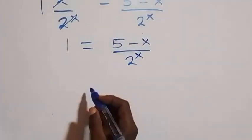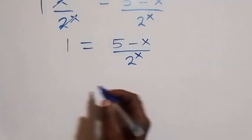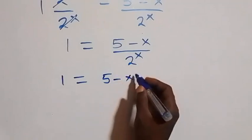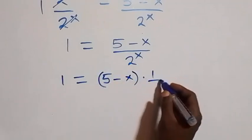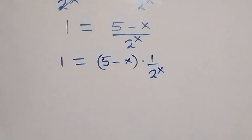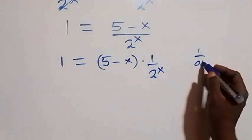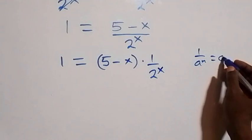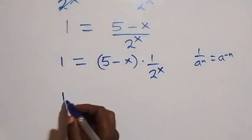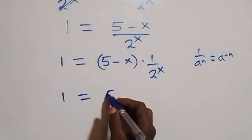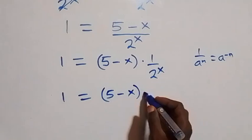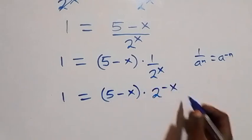From here, this can also be written as 1 equals to 5 minus x multiplied by 1 over 2 raised to power x. And from the rule, 1 over a raised to power n equals a raised to power minus n, this is the same thing as 1 equals to 5 minus x multiplied by 2 raised to power minus x.